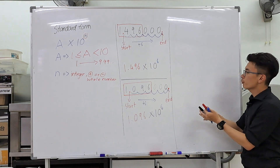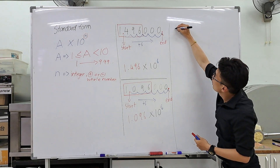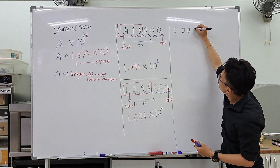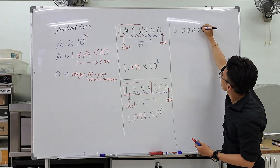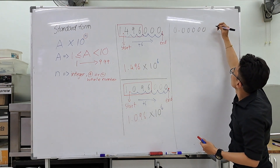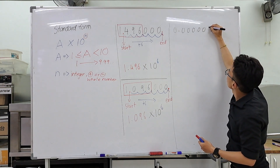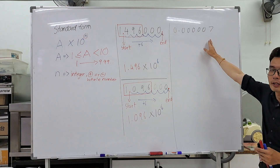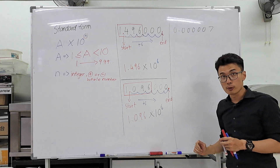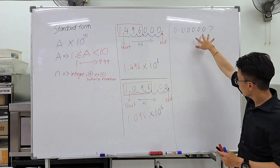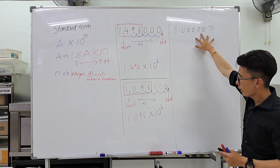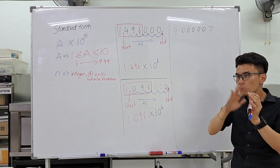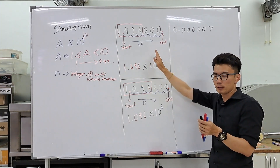Let me give you an example: 0.00007. This is a relatively small number, but how do I take this and change it to standard form? The rules are the same as for a big number.